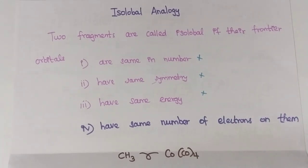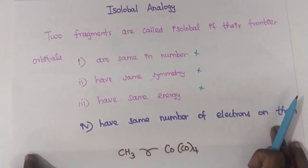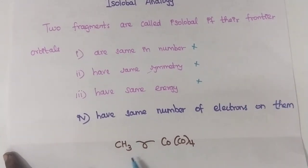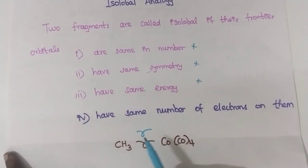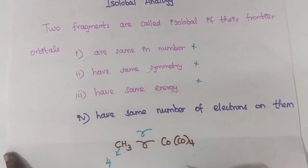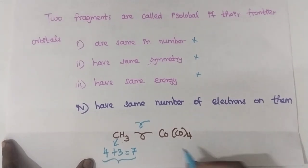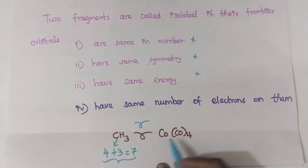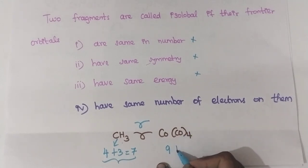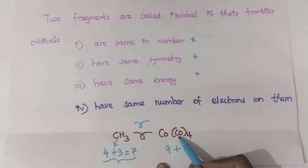If both fragments have the same number of electrons, they are isolobal. For example: methyl (CH₃) — carbon has 4 valence electrons and three hydrogens contribute 3 electrons, giving 7 electrons total. For Co(CO)₄: cobalt has 9 valence electrons (d⁷4s²), and each carbonyl donates 2 electrons, so four carbonyls donate 8 electrons, giving 17 electrons total.